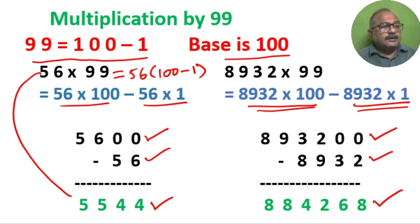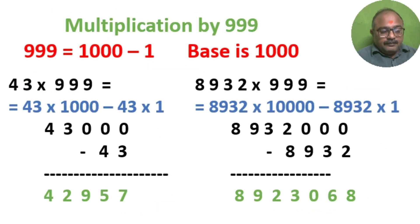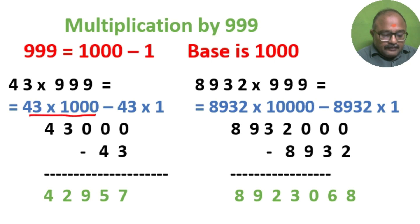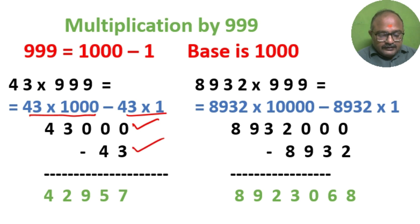This is the easiest technique, based on 100. Now, multiplication by 999: so 43 into 999 is 43 multiplied by 1000 minus 43 multiplied by 1, which is 43. If you subtract, we get the answer: 42957.